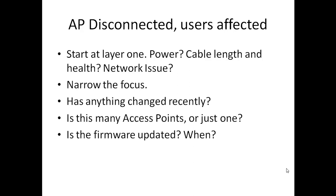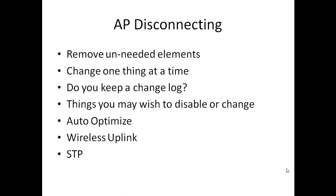Fix one thing, test it, fix the next thing. Remove unneeded elements. Go into the controller and ask: do I really need this wireless uplink? If not, disconnect it. Change one thing at a time — and are you keeping track of these changes? Make a list of things you might want to change or disable, including things you'll see on the forums. For example, if you have an older version of the controller with an auto-optimize button, you may not want that enabled — wait and see if disabling it solves the problem.